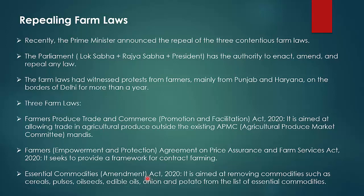Next was the Essential Commodities Amendment Act, 2020, aimed at removing commodities such as cereals, pulses, oil seeds, edible oils, onion, and potato from the list of essential commodities.